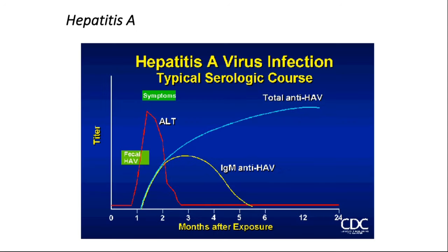This slide shows the typical serological course in persons infected with hepatitis A virus. The virus can initially be identified in stool. Raised liver function tests — ALT and AST — are noted early in infected persons, followed by anti-hepatitis A virus IgM, which starts rising approximately one month post-exposure and peaks at the third month before being replaced by IgG antibodies. Both previous infection and vaccine can provide lifelong immunity to hepatitis A virus.